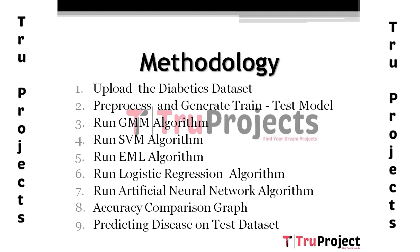The eighth module generates an accuracy comparison graph, plotting graphical representations of accuracy for all algorithms used in the project. The ninth module predicts disease on the test dataset using the highest-performing algorithm identified in the project, and outputs predictions for all test data samples.